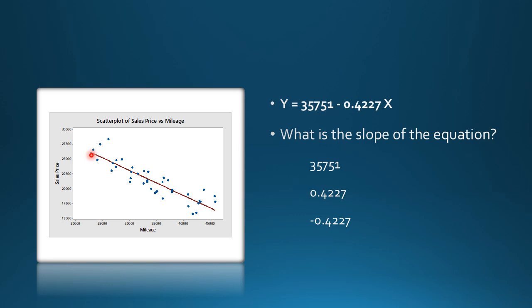If we use regression, here is the line for this data. The slope is -0.4227, which means when the car is driven one mile, the sales price decreases by 0.4227 dollars. This translates to a decrease of 4,227 dollars for every 10,000 miles driven.